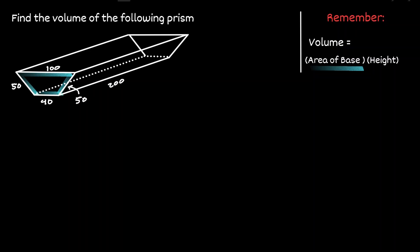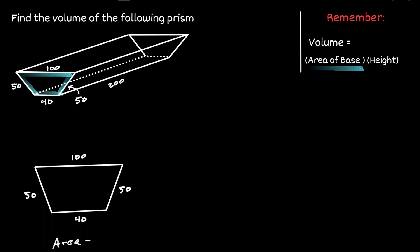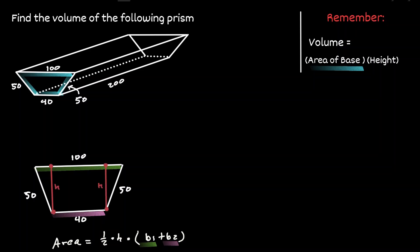Let's examine this trapezoid individually. The area of a trapezoid is equivalent to one half times the height of the trapezoid, times the sum of the first base and the second base. The first base is 100, and the second base is 40. The only piece of information we're missing is the length of the height. To find the height, let's consider a vertical line that connects the first base with the second base, and find the length of this perpendicular line.